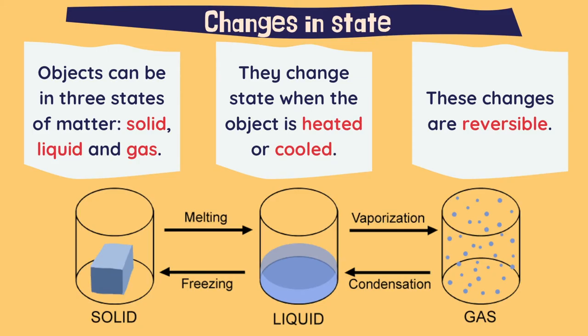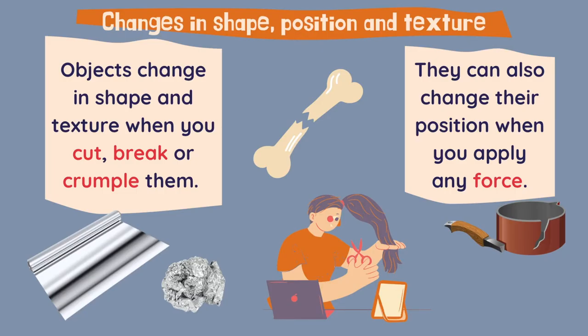Objects can change state when they are heated or cooled, and these changes are reversible. If we add more heat to an object, it can go from solid to liquid — that is melting. Vaporization is the change from liquid to gas. If we cool the object, it can go from gas to liquid through condensation, and freezing is the process that takes it from liquid to solid.